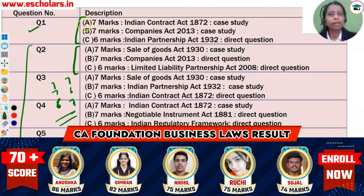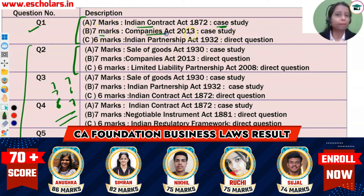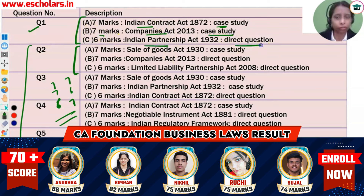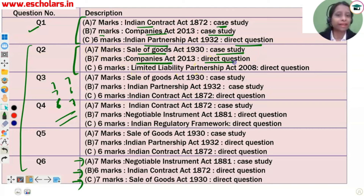As we go into the details, Question 1, A part — 7 marks — will come from Indian Contract Act chapter and will remain a case-study based question. B part — 7 marks — will come from Companies Act, also case-study based. C part — 6 marks — will come from Indian Partnership Act as a direct question. Question 2, A part — 7 marks — is Sale of Goods Act, case-study based. B part is Companies Act, direct question. C part — 6 marks — is LLP, direct question.